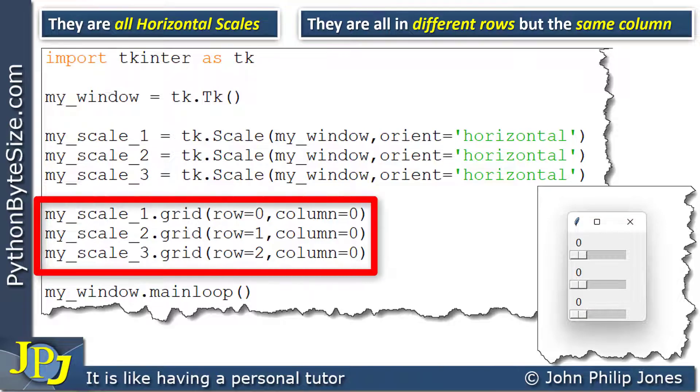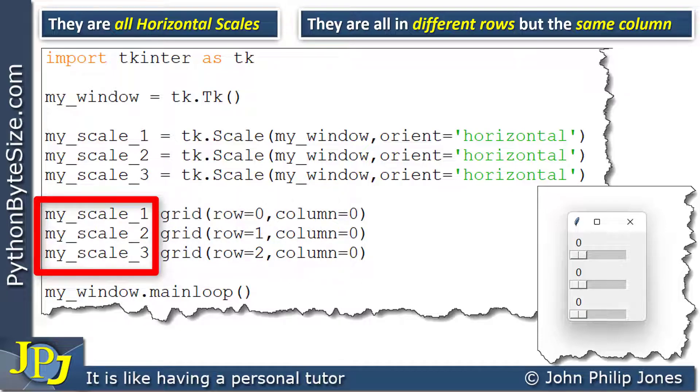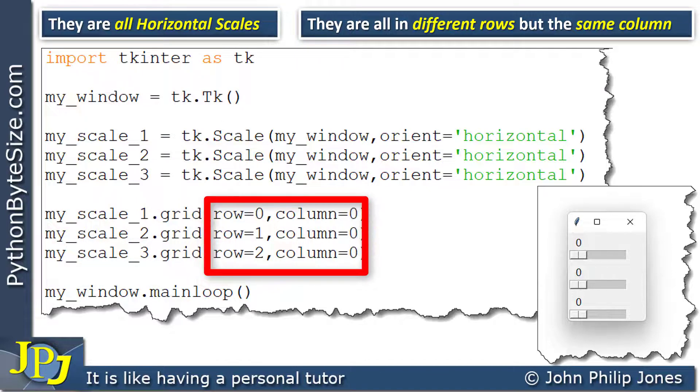These three program statements are responsible for positioning the scale widgets onto the window. And you can see I'm referring to each of the widgets in turn. And for each case, I'm invoking the grid method, and here you can see I'm setting the row and column appropriately.